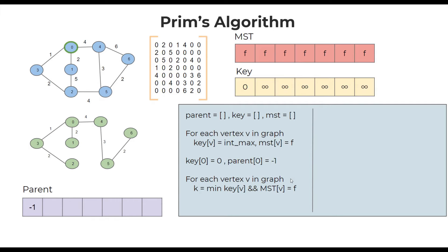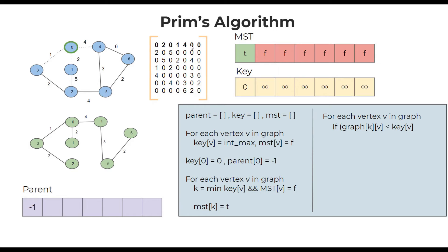Once we pick vertex k, we mark MST of k as true. Then for each vertex present in the graph, if the adjacency matrix value is greater than zero and less than the current key table value, we update the key table. Since we are dealing with an adjacency matrix, there will be many zeros which we should ignore. So only if the value is greater than zero and less than the existing key value do we update the key table.